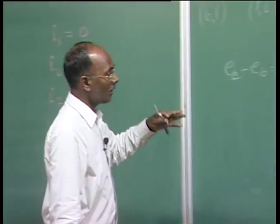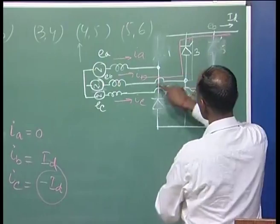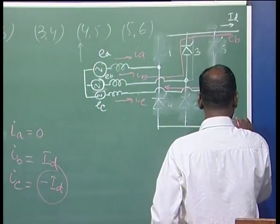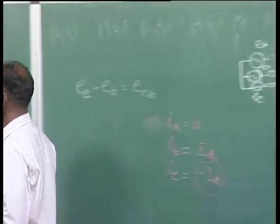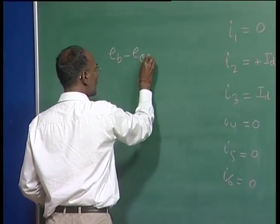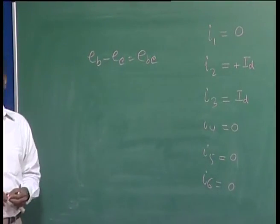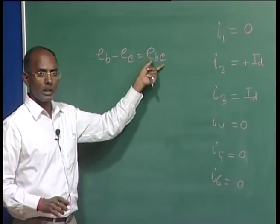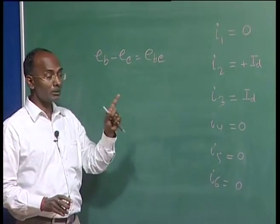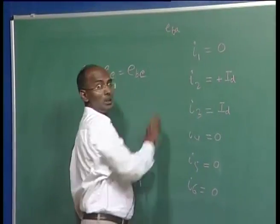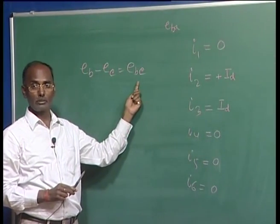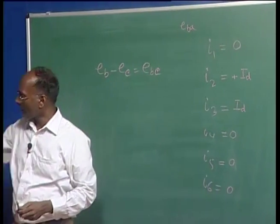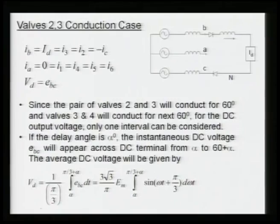The output voltage when two and three are conducting: E_B appears at the positive rail and E_C at the negative rail, so output voltage is E_B minus E_C, which equals E_BC. During the 60-degree interval when valves two and three conduct, the output voltage is the line-to-line voltage E_BC. Note: the commutation voltage of valve three was E_BA, but the output voltage is E_BC — they are different and one must be careful about this distinction.